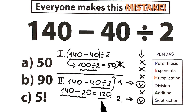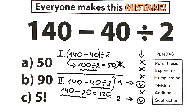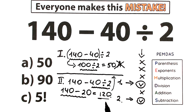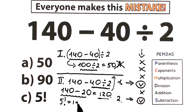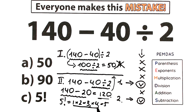The correct answer is 120. Looking at the options — 50, 90, and 5 factorial — 5 factorial is the product from 1 to 5: 1 times 2 times 3 times 4 times 5. That gives us 2 times 3 equals 6, times 4 equals 24, times 5 equals 120. So 5 factorial equals exactly 120 — the same value as our answer.